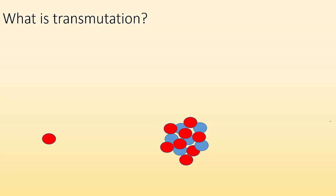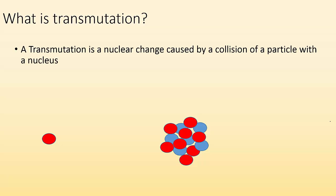Alright, so first off, what is a transmutation? Well, basically a transmutation is a nuclear change caused by a collision of a particle with a nucleus.